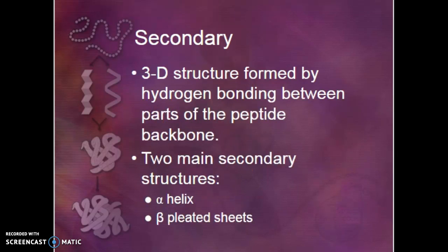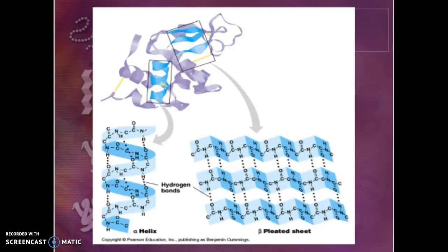Our secondary structure, we're going to get some hydrogen bonding between the parts of the peptide backbone. We're going to get alpha helices and beta-pleated sheets based on the chemistry. Here we've got hydrogen bonds happening and we're forming a helix.